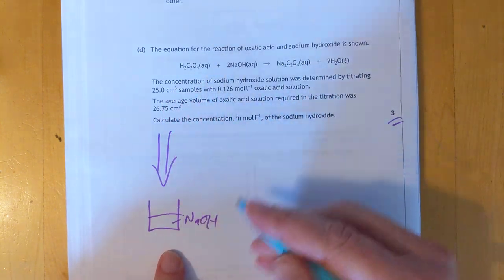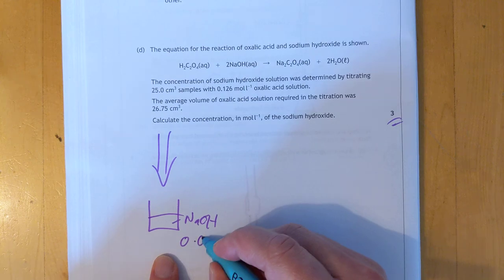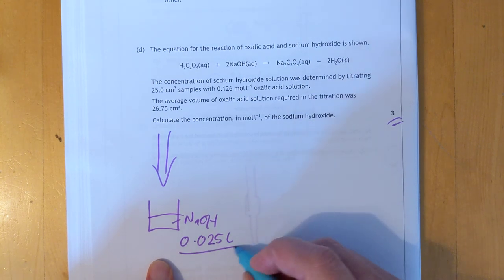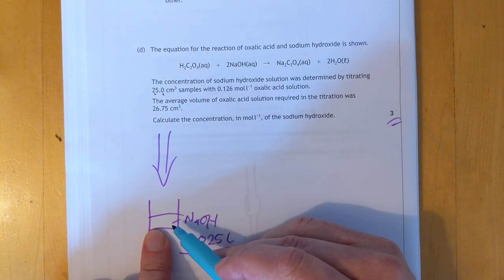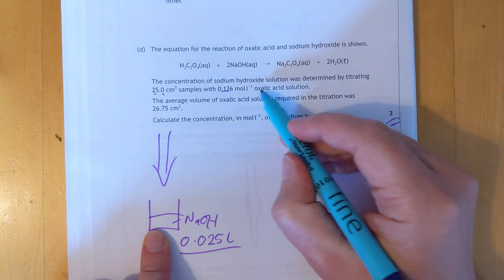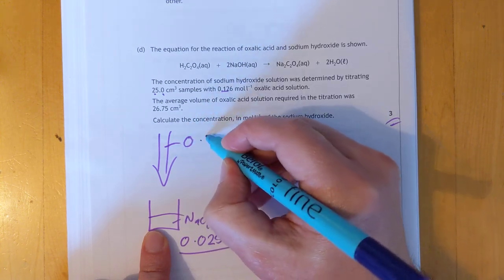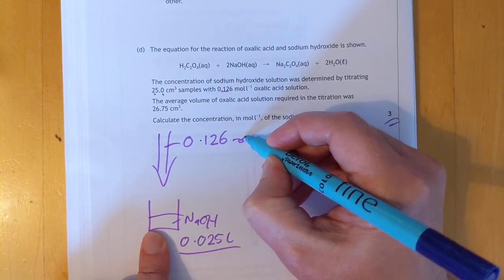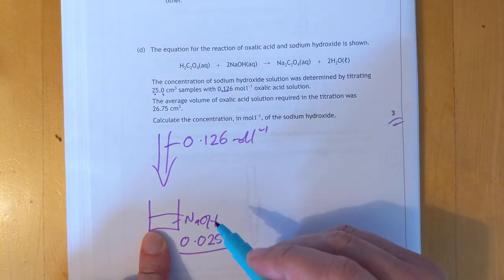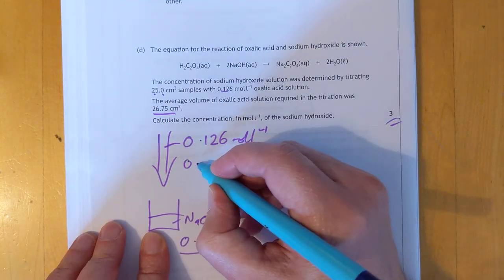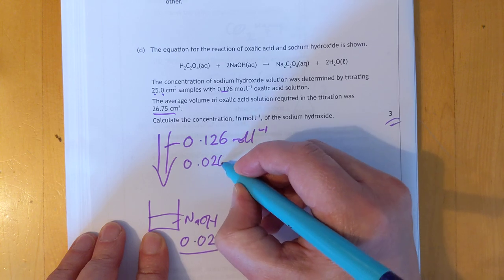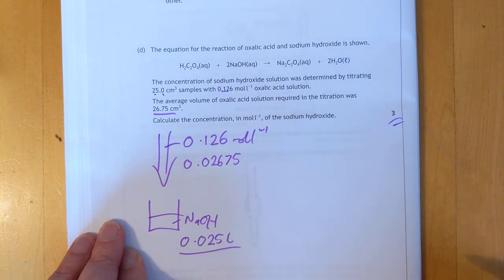Do we have some volumes? Titrating 25 ml samples, 0.025 litres. That's the volume in there. I know that because it's 25.0, it's a precise volume. There's the concentration of the oxalic acid. It is 0.126 moles per litre. And we dropped in an average of 26.75 centimeters cubed. So 0.02675. Brilliant.